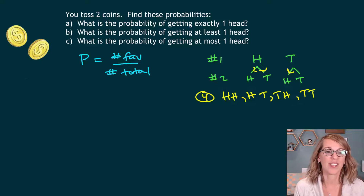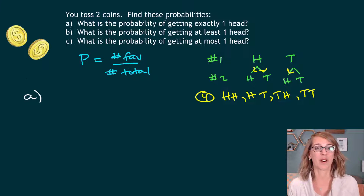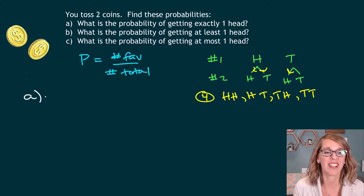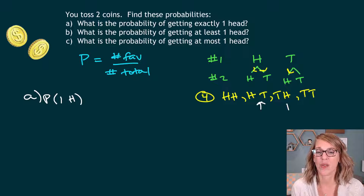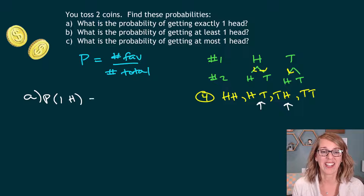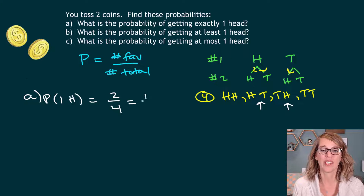Let's move on to part A. What's the probability of getting exactly one head? That's going to happen with a head-tail or a tail-head, so that gives me two favorable outcomes out of the four total, which is one half.